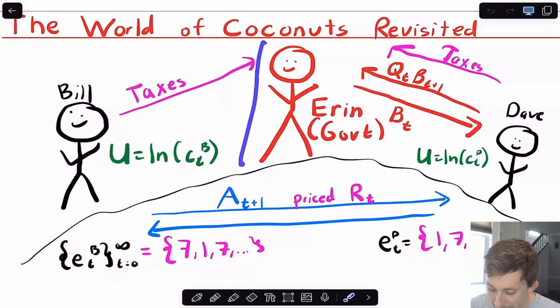But now we're introducing Erin. And what Erin is going to do is Erin is going to act like the government. So first of all, Erin is going to collect taxes. Bill and Dave are both going to have to pay an amount T for tax to Erin. And the other thing that Erin is going to do is she is going to be able to sell and buy government bonds. Just to make it easy, we're going to say Dave has been the chosen one. He's the only one who's allowed to buy and sell bonds with Erin.